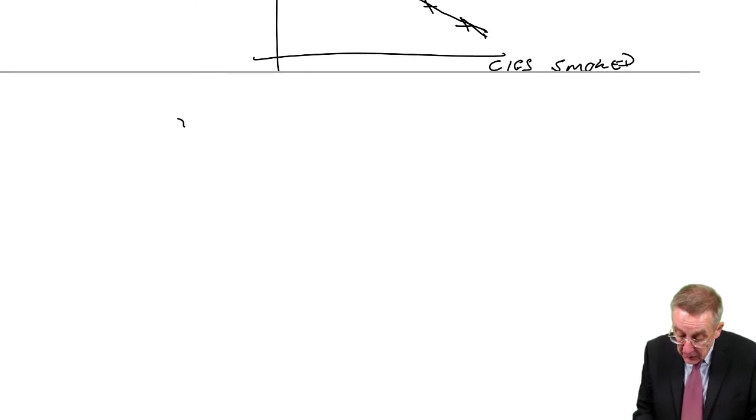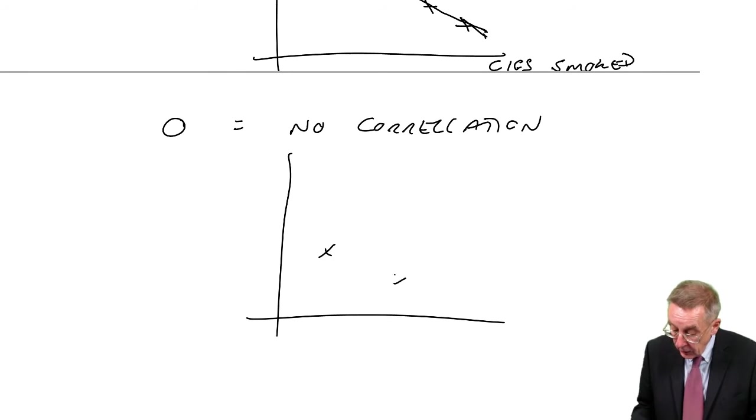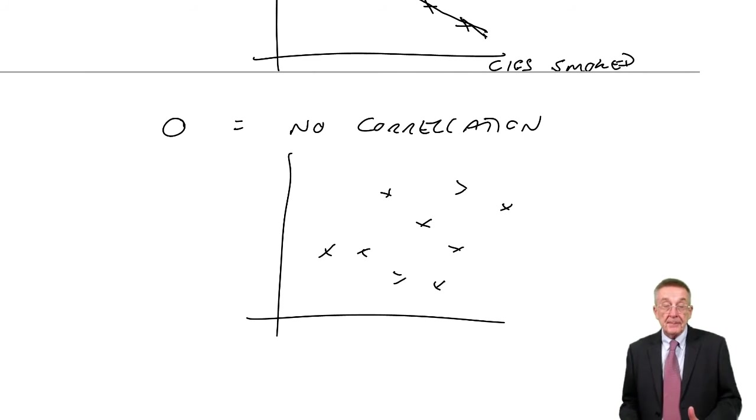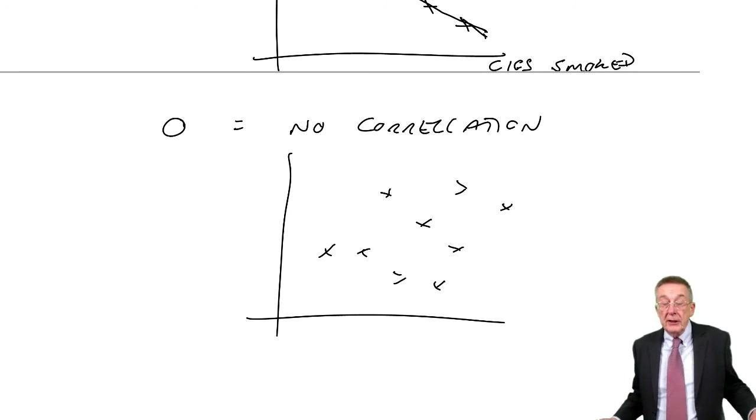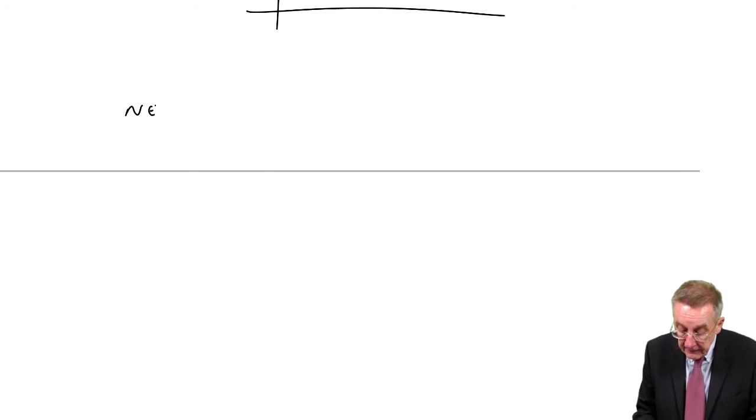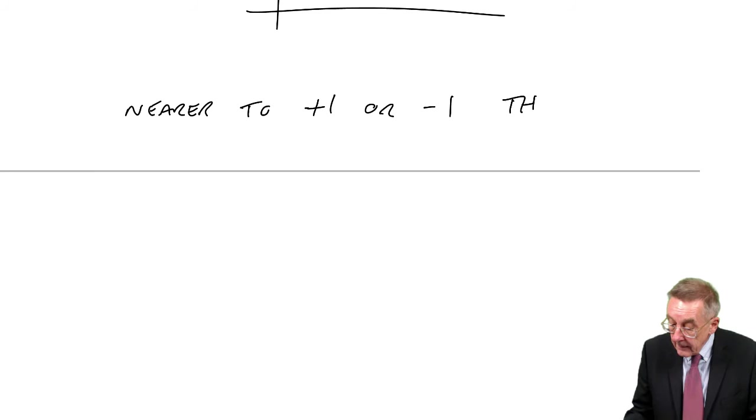So, if it's one, it's perfect positive or negative. If it's zero, we'd say there's no correlation at all. Put them on a graph and they're just all over the place. It would mean there was no relationship whatsoever.